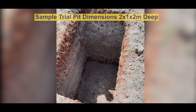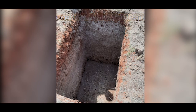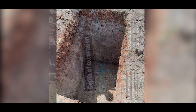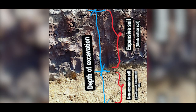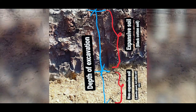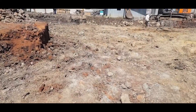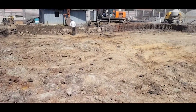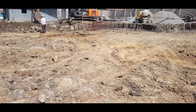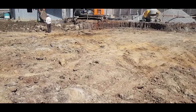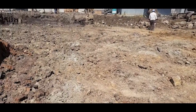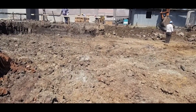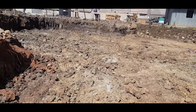So we did three trial pits just to try and determine the average depth of the black cotton soil, which was determined to be about 1.2 to 1.3 meters deep. After the results were out, we decided to mass excavate the entire plinth area of the house.